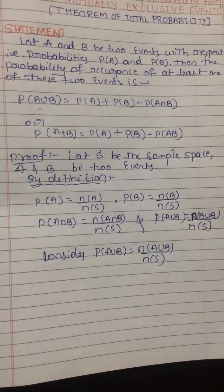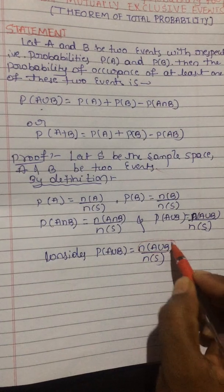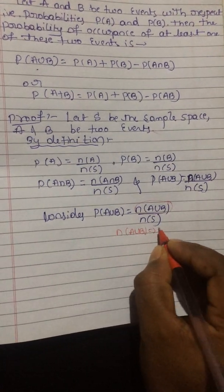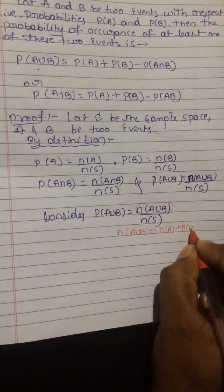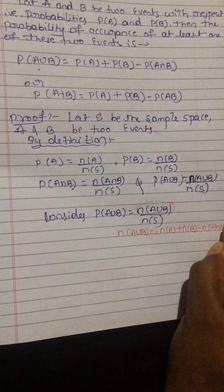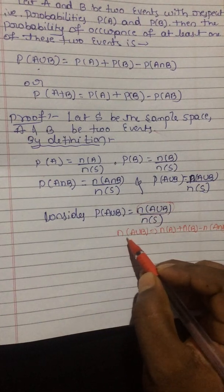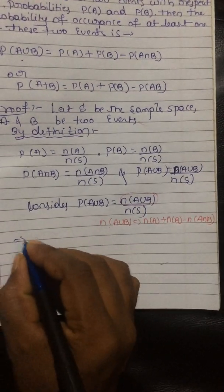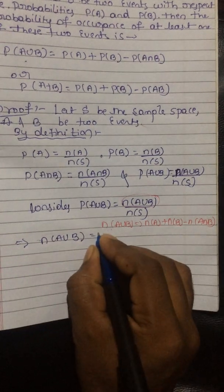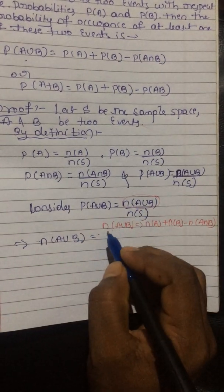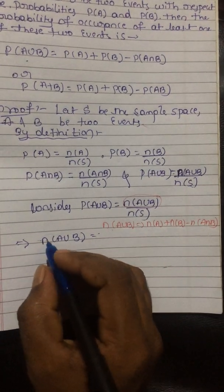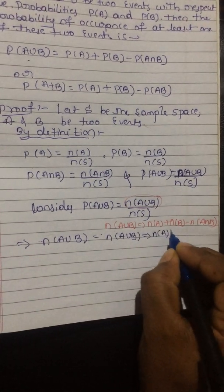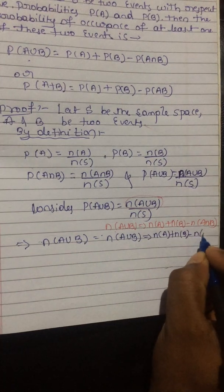I will substitute this value into the expression for P(A∪B). In place of N(A∪B), I will write N(A) + N(B) - N(A∩B). So P(A∪B) = [N(A) + N(B) - N(A∩B)] / N(S).